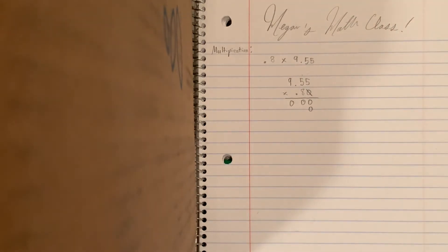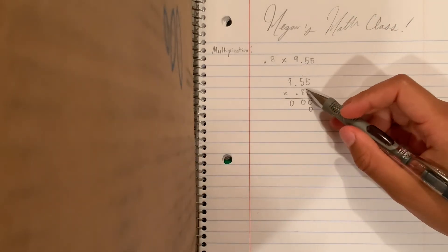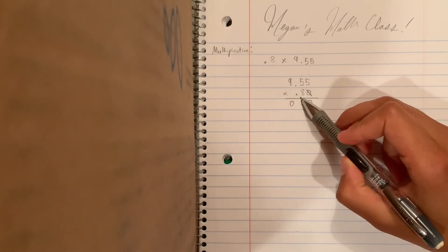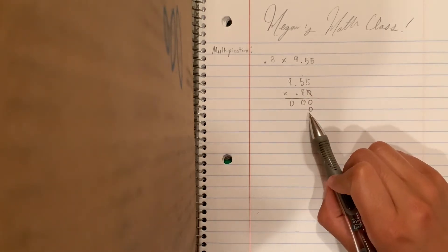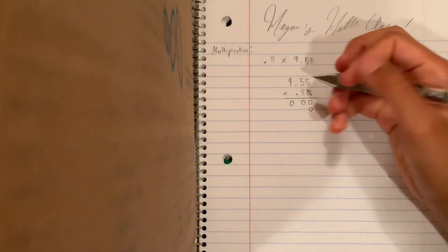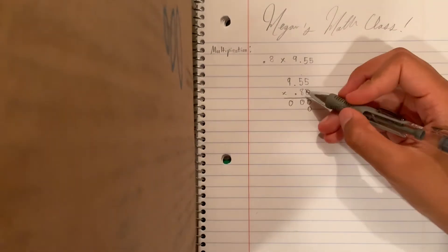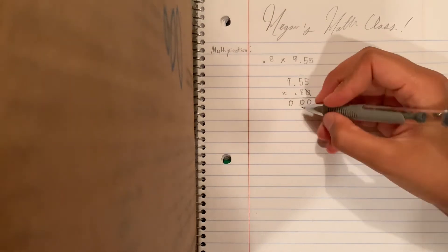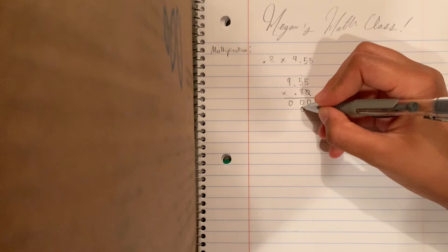So now we're moving on. And because we're moving a place, a placement, we're going to add a 0. That's why that 0 is there, to make sure we're in the right place. So now, 8 times 5 is 40. So we're gonna add a 0 right here. And then we're gonna add a 4 right there.